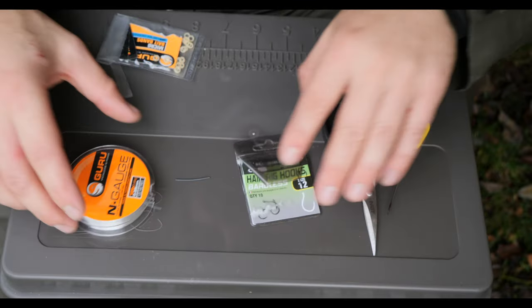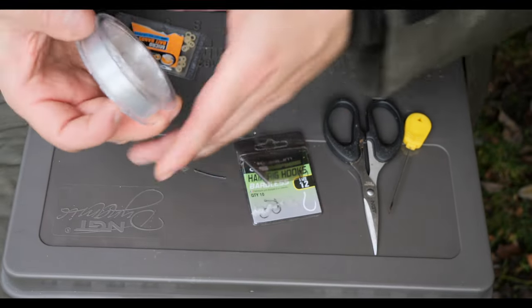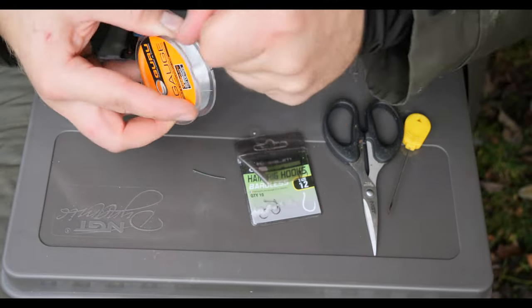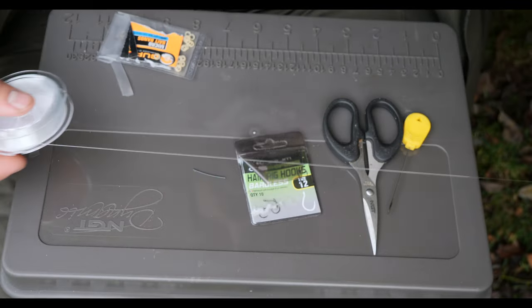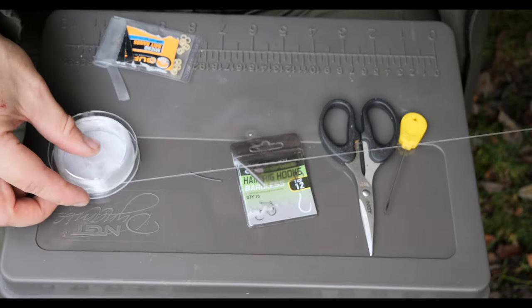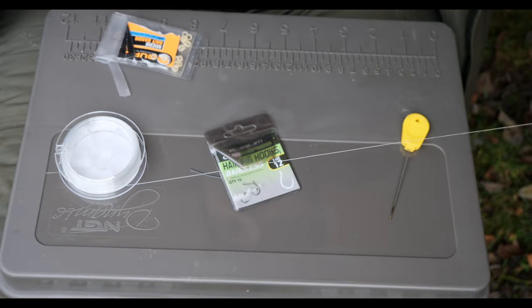I've got everything in front of me that we're going to need to tie this rig. First thing I'm going to do is take some of our hook link material. Give yourself a good amount to work with. I'm going to cut about a foot and a half off there.